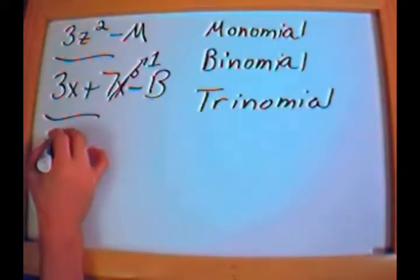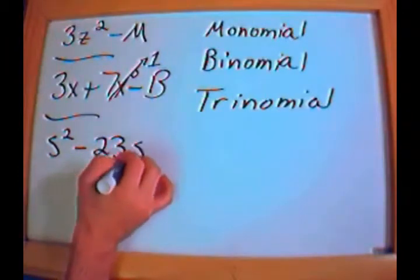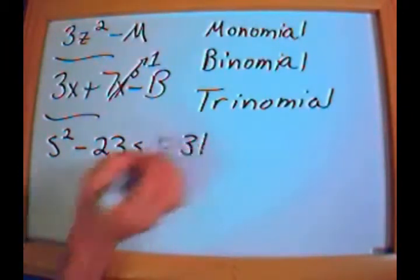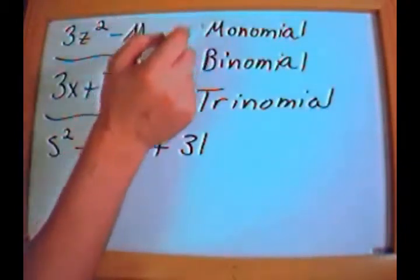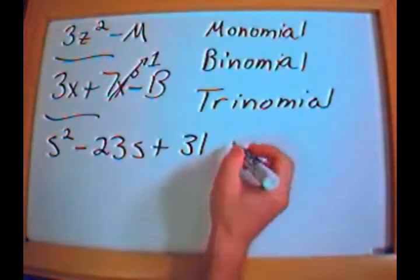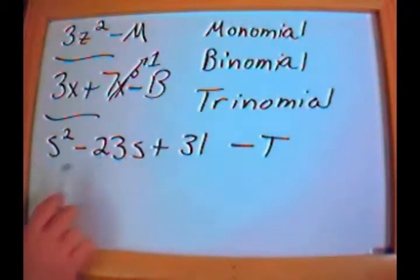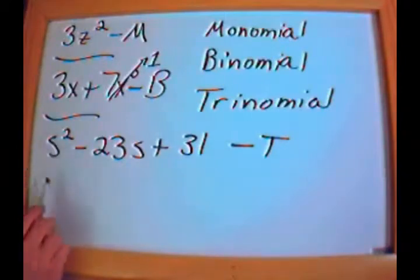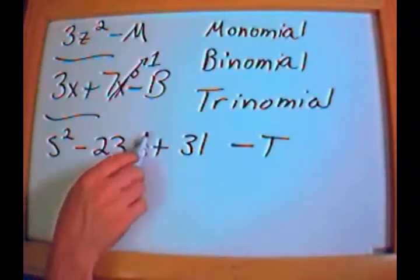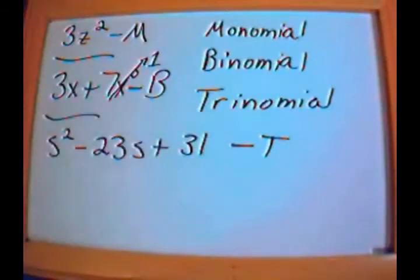Another example would be s squared minus 23s plus 31. Is this a monomial, a binomial, or a trinomial? It's a trinomial, because it contains three terms in s. We have an s to the second power term, an s to the first power term, and then an invisible s to the 0 power term, because anything to the 0 power is 1 and that drops out.